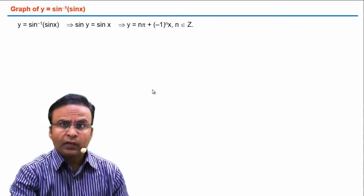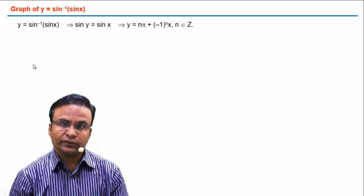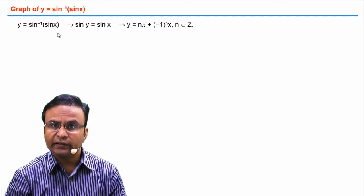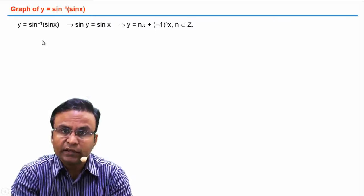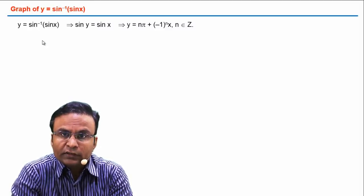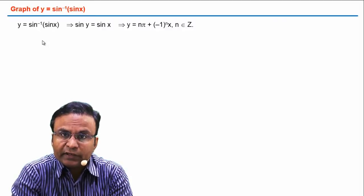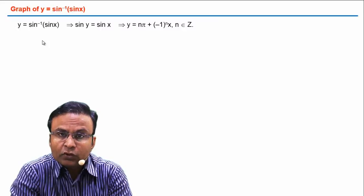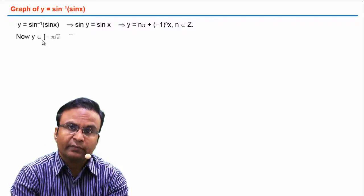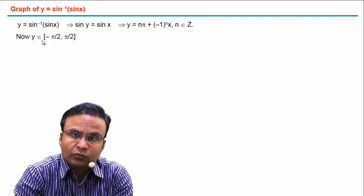Now, what is the range of this function y = sin⁻¹(sin x)? Since sin⁻¹ is an inverse sine function, its range is minus π/2 to π/2. So the values of y belong to the interval [-π/2, π/2].